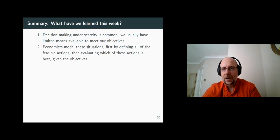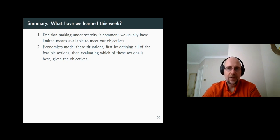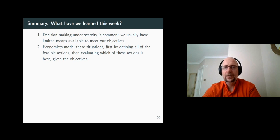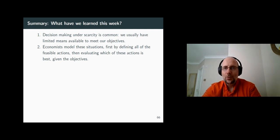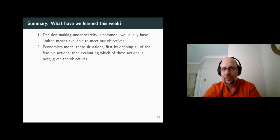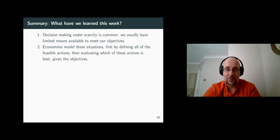Our constraints are defined by what's feasible. What is feasible, however, is not always what we want — it is not always desirable. We found a way to combine the two, the feasible and the desirable, and found a point that is both desirable and feasible, and we can't do better than this point.